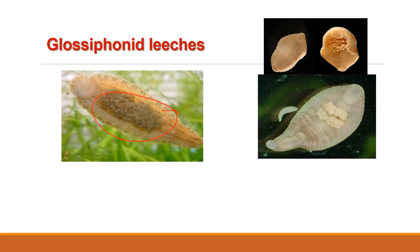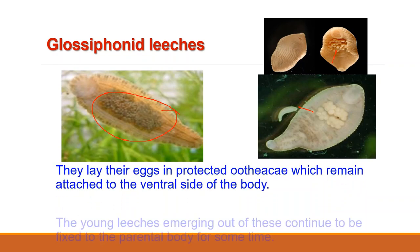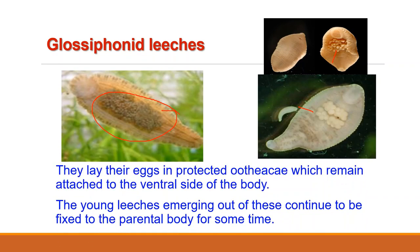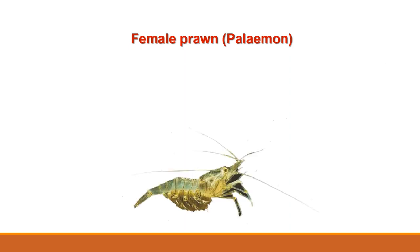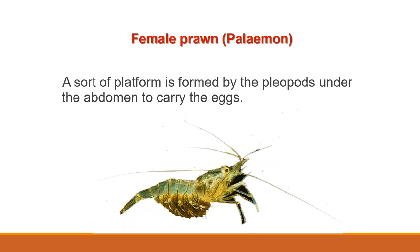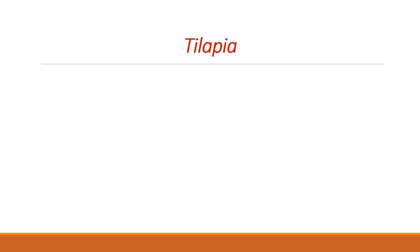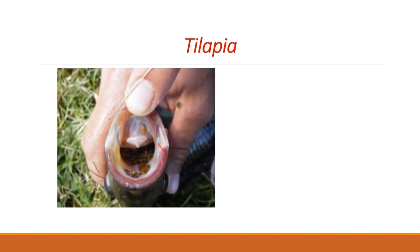The young leeches emerging from these continue to be fixed to the parental body for some time. Some display a high level of parental care involving brooding and direct feeding of the young. These eggs are fragile and will not develop if removed from the parent. In case of female prawn Palaemon, a sort of platform is formed by the pleopods under the abdomen to carry the eggs. The males of a number of marine fishes, for example tilapia, keep the eggs in their mouths till they hatch.